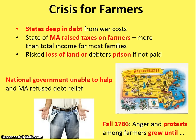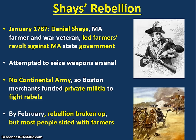This came to a head in late 1786 with a crisis for farmers. The states were deep in debt from the Revolutionary War. To address this, Massachusetts raised taxes on farmers — in some cases, taxes were actually more than the total income of most farm families. These farmers risked losing their land or being sent to debtor's prison if they did not pay. When the farmers turned to the national government for relief, it had no way to help them. So in the fall of 1786, anger and protest grew among these farmers, leading to Shays' Rebellion.